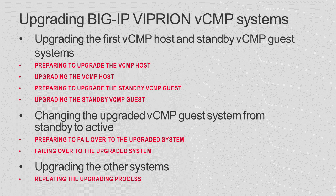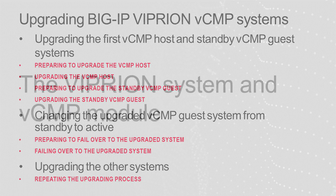It also demonstrates how to upgrade a VCMP Guest High Availability, or HA, device group that is running on the VCMP host. There are three parts to the upgrade: upgrading the VCMP host and standby VCMP guest systems, changing the upgraded VCMP guest system from standby to active, and then upgrading the other system. For links to each step in this video and a written version of the procedures, check the description section for the video.